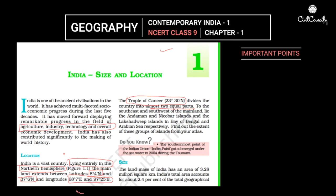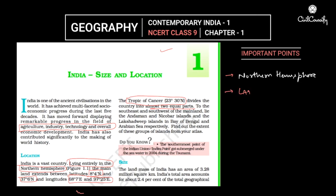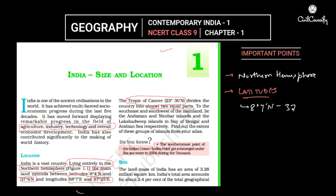When we talk about the location, India is a vast country lying entirely in the northern hemisphere — this is important. Regarding the latitudinal extent, since it is in the northern part, the latitudes extend from 8 degrees 4 minutes north to 37 degrees 6 minutes north. Both values are north, confirming it is entirely in the northern hemisphere.